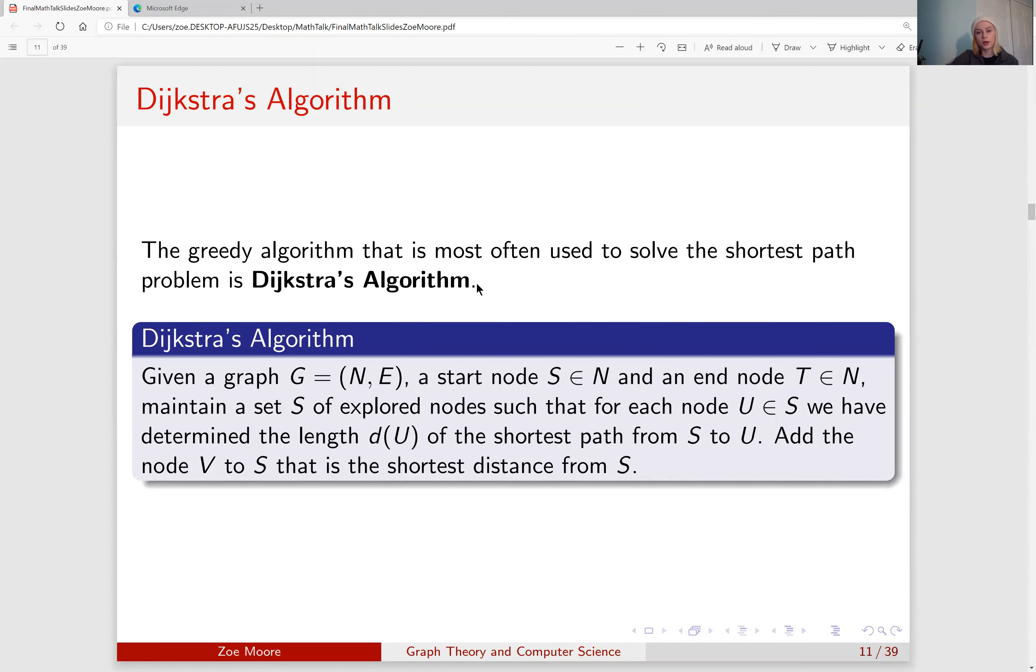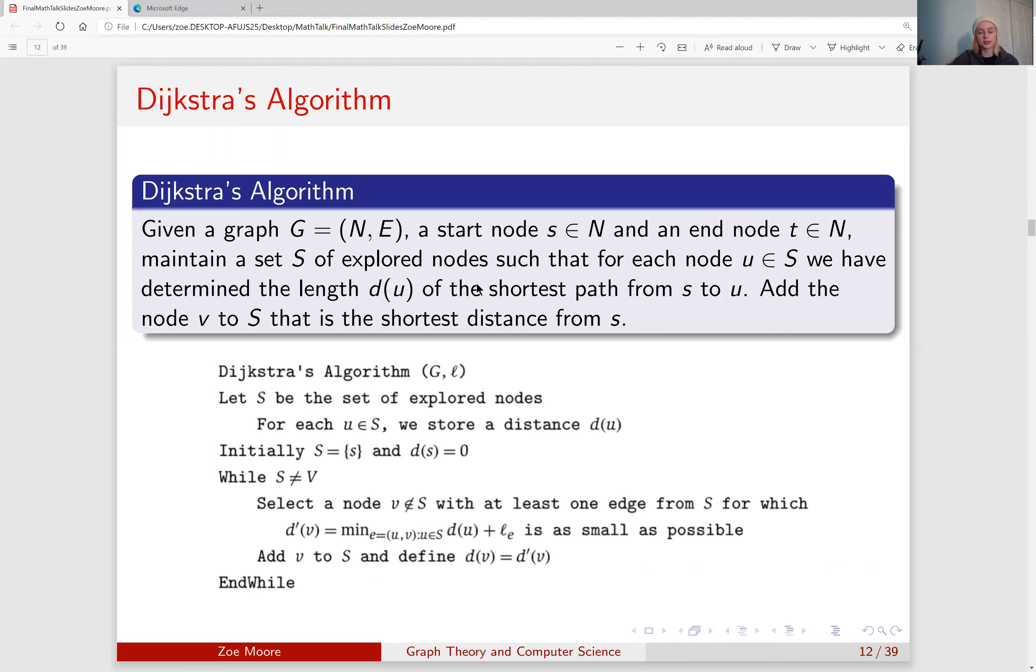Dijkstra's algorithm is a popular greedy algorithm that is used to solve the shortest path problem. It says, given a graph and a start node S in our set of nodes and an end node T in our set of nodes, maintain a set of explored nodes such that for each node in this set of explored nodes we have determined their lengths, which we will call D of U, and add a node V to our set of explored nodes that is the shortest distance from our starting node. This is a little wordy, but it's best represented in an algorithmic form. So we let our set S be our set of explored nodes and for each U in S we store its distance. Then initially S is our starting node and the distance for S is 0 because the distance from a node to itself is 0.